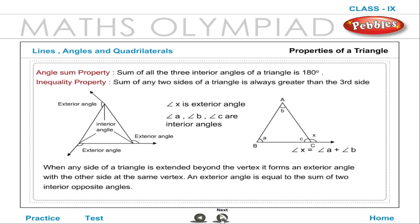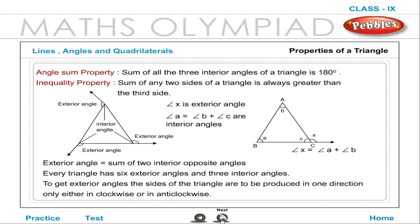Properties of a triangle. Angle sum property: The sum of all three interior angles of a triangle is 180 degrees. Inequality property: The sum of any two sides of a triangle is always greater than the third side. When any side of a triangle is extended beyond the vertex, it forms an exterior angle with the other side at the same vertex. An exterior angle is equal to the sum of the two interior opposite angles.